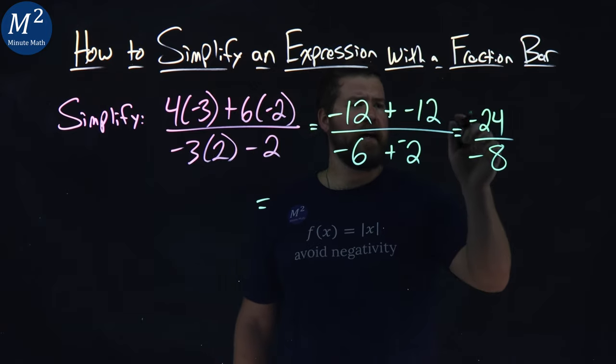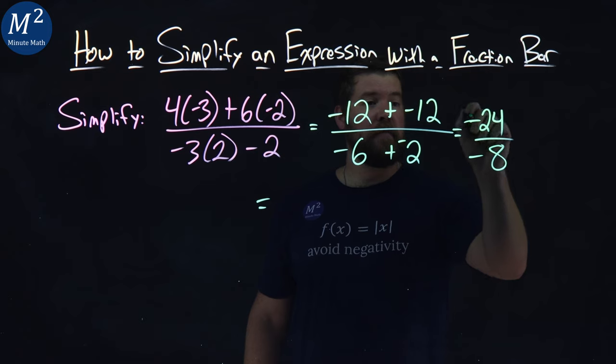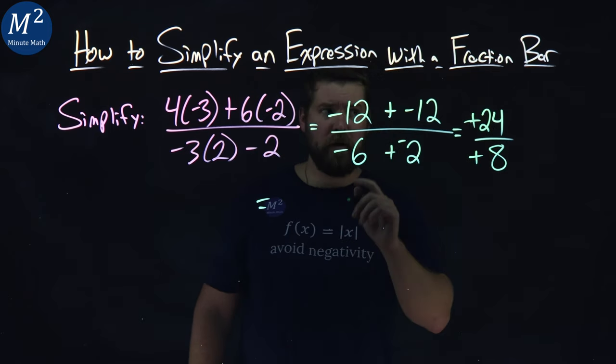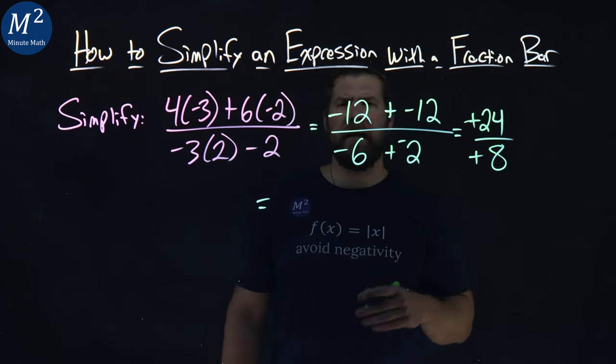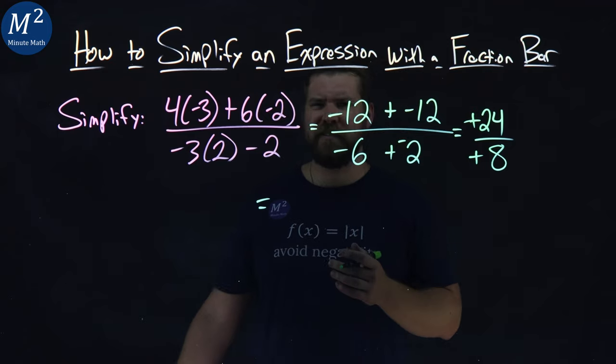Alright, well negative divided by a negative is a positive, so we're good there. 24 divided by 8, that's 3.